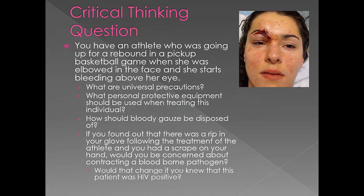Here's our critical thinking question for this chapter. Please answer this question as part of your assignment for this unit. You have an athlete who was going up for a rebound in a pickup basketball game when she was elbowed in the face and started bleeding above her eye. Answer the following questions: What are universal precautions? What personal protective equipment should be used when treating this individual? How should bloody gauze be disposed of? If you found out that there was a rip in your glove following the treatment of your athlete and you had a scrape on your hand, would you be concerned about contracting a bloodborne pathogen? Would that change if you knew that this patient was HIV positive?